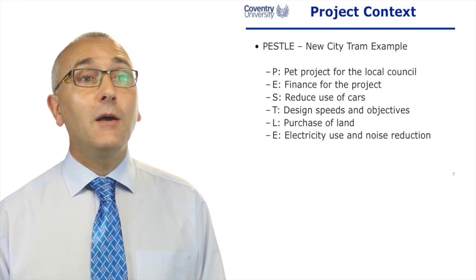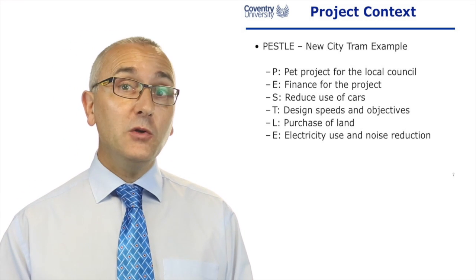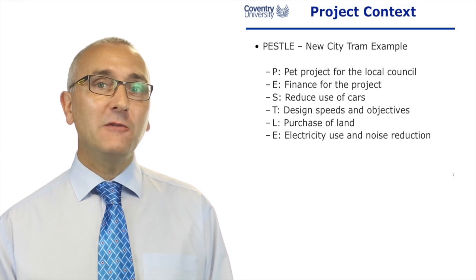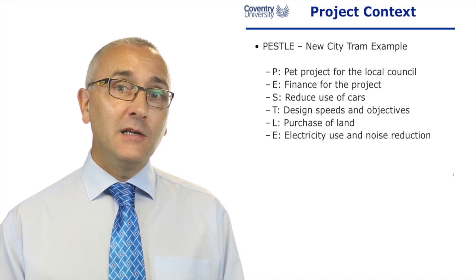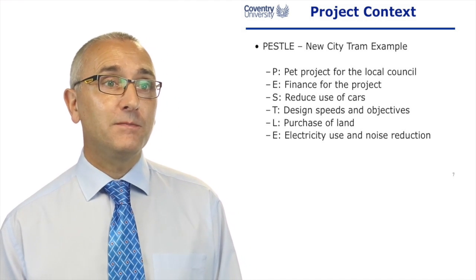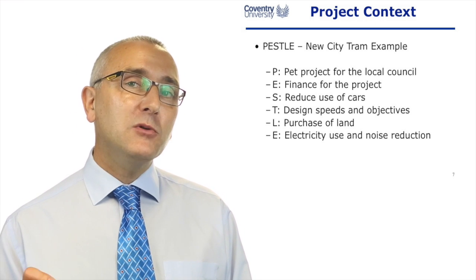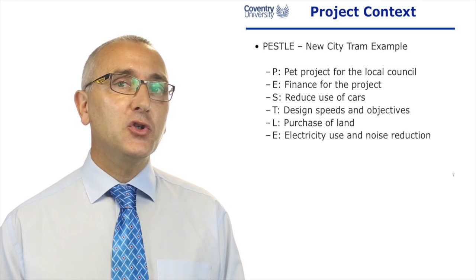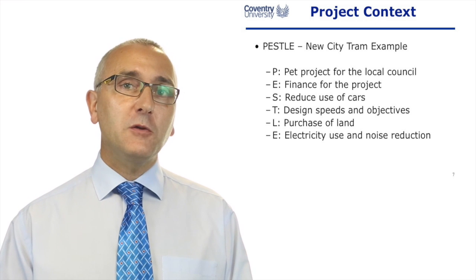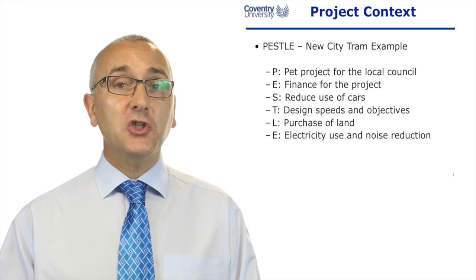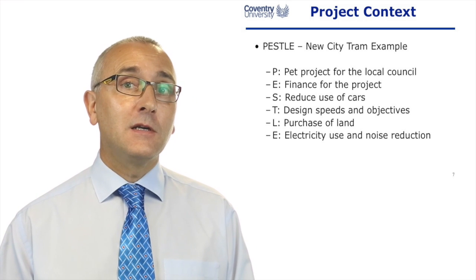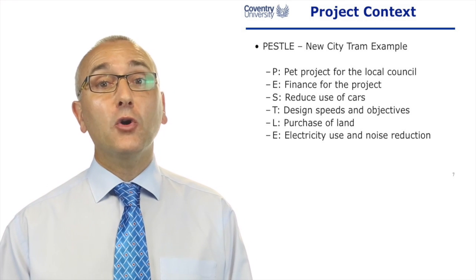Imagine you're running a project — a new city tram, for example. The Edinburgh tram system is a good example of a project that's had many problems over its life because of the environment. Politically, the local council said they wanted trams in Edinburgh — it was a prestige project for them, perhaps more than a business project to make money. Sociologically, how do you get people to stop using their cars and use public transport? Legal issues include the purchase of land. Environmental issues include reduction of CO2 emissions and car transport, but also the opposing use of electricity to power the trams, and hopefully some noise reduction in city centres. A PESTLE analysis can help you understand the project context.